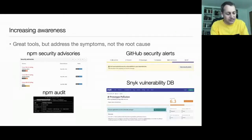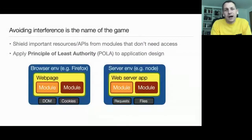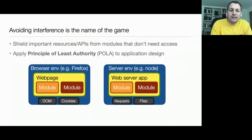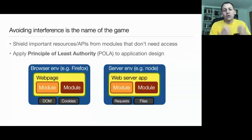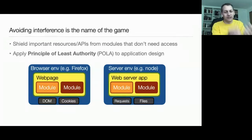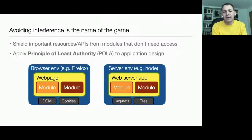What I want to talk about is how to get to the root cause and design software differently. We want to avoid interference between modules from the get-go. In the security literature, this is called the Principle of Least Authority, or POLA. It simply means that whenever you create a module, that module only gets access to the powerful or dangerous APIs it needs to get its job done — nothing more, but also nothing less. If a module needs to make HTTP requests, give it access to XHR. If it doesn't need file system access, just don't give it that — so even if the module turns bad, it can't do much damage.